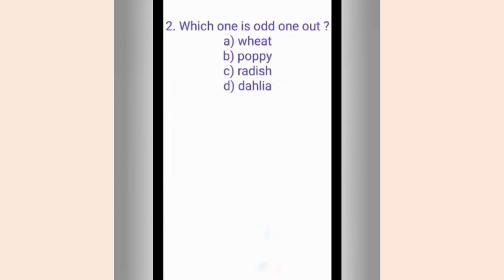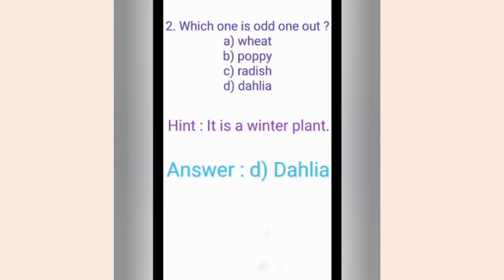Question number two. Which of them is the odd one out? The options are A. Wheat, B. Poppy, C. Radish, D. Dahlia. The hint is it is a winter plant. The correct answer is option D, Dahlia. In winter the days are short and nights are long. These plants need long duration of dark period for their flowering beyond their critical photoperiod.